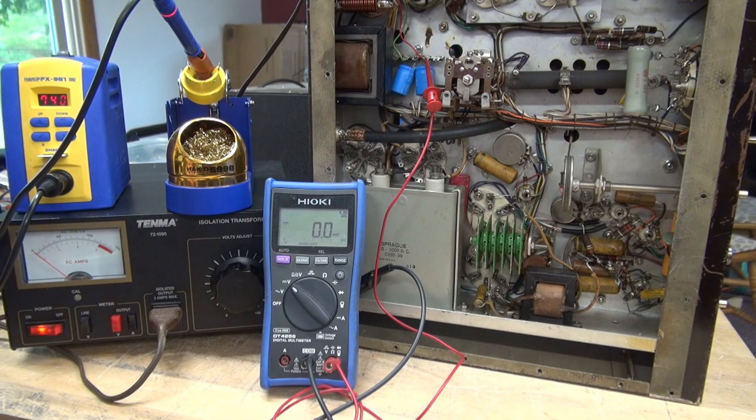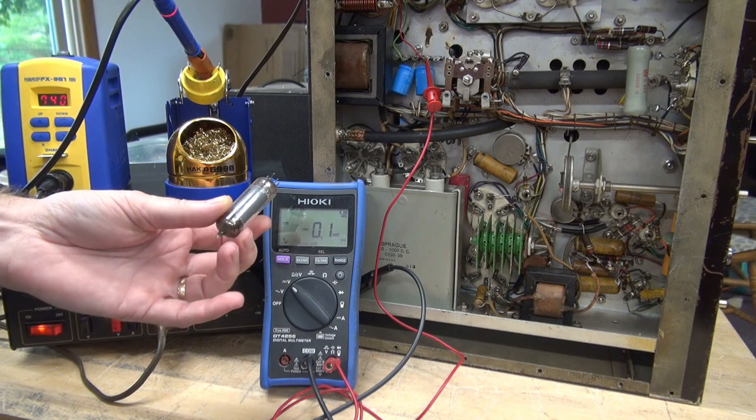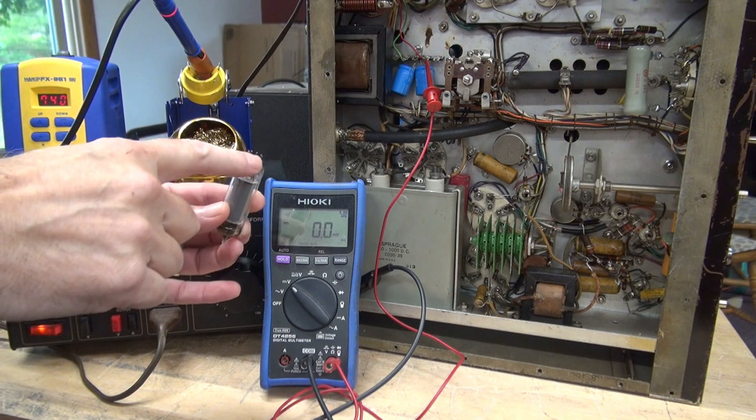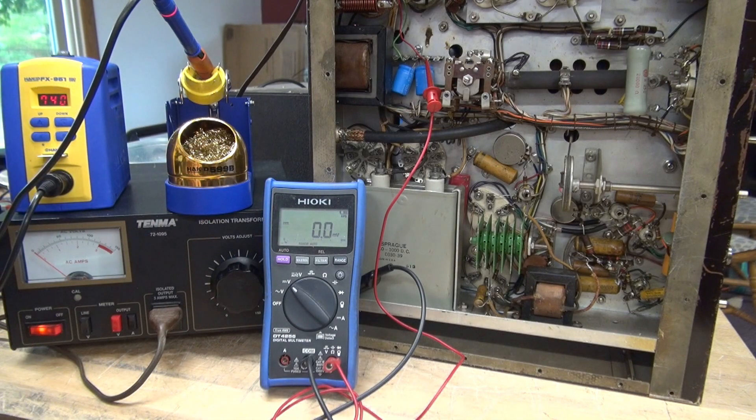Alright we're going to check that power supply but I wanted to point out a few other interesting things. This is the 6AQ5 buffer amplifier tube. Check out the pin. And then that oscillator tube, the 6AU6, yeah it wasn't even there.